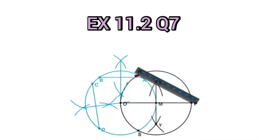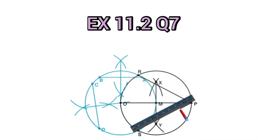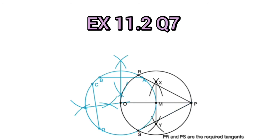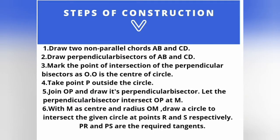On joining PR and PS, we obtain two tangents to the circle from the external point P. So PR and PS are the required tangents. Let us now see the steps of construction: draw two non-parallel chords AB and CD; draw perpendicular bisectors of AB and CD; mark their point of intersection as O — O is the center of the circle; take point P outside the circle; join OP and draw its perpendicular bisector, letting it intersect OP at M; with M as center and radius OM, draw a circle to intersect the given circle at points R and S. PR and PS are the required tangents.